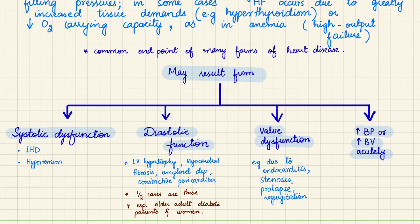Systolic dysfunction can occur due to ischemic heart disease, which results in myocardial ischemia, angina, and MI — we lose part of the heart to ischemia and the rest has to work harder to compensate. That is why IHD causes systolic dysfunction. Hypertension can also cause systolic dysfunction because it increases total peripheral resistance, that is the pressure against which the heart has to pump.